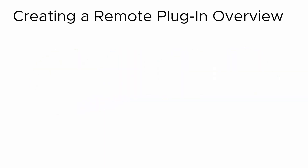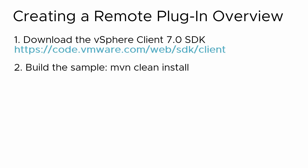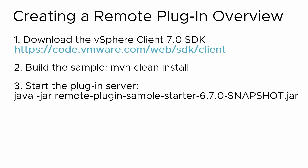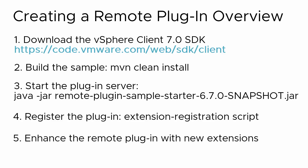The steps to create the remote plug-in sample are: download the vSphere client 7.0 SDK, build the sample with the mvn clean install command, start the Spring Boot application server with the Java command, register the plug-in with the extension registration script, and enhance the remote plug-in sample with new extensions.